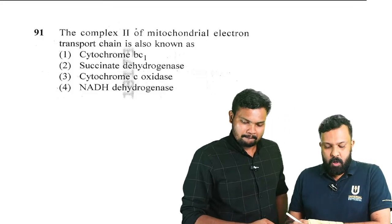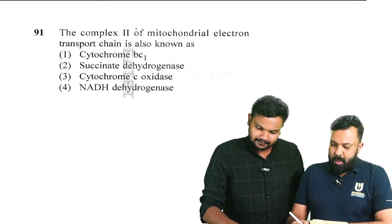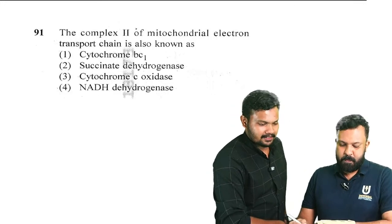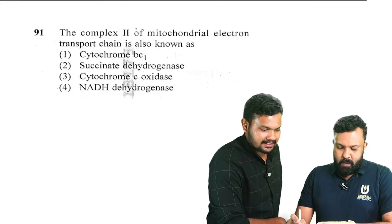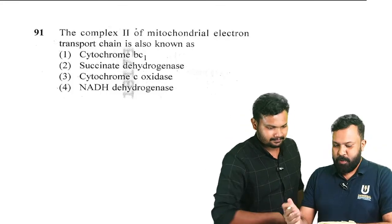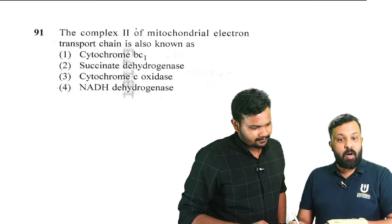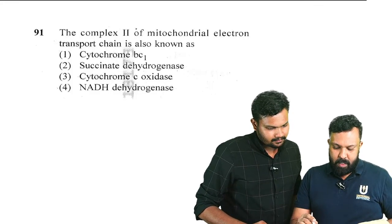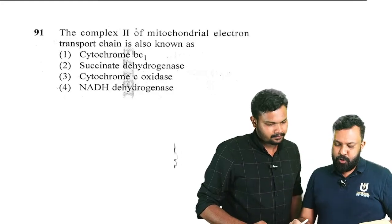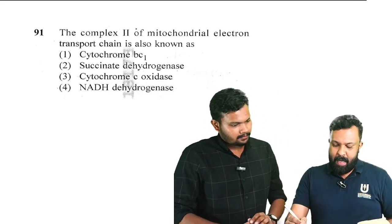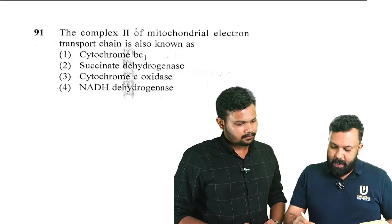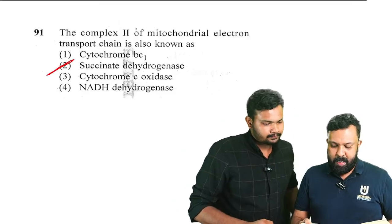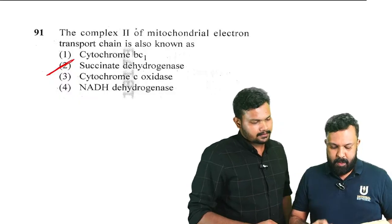Let's have an overview about the botany questions. The very first question is on respiration — the inner membrane complex is the discussion. Complex number two of the mitochondrial electron transport chain is known as: options are cytochrome BC1, succinate dehydrogenase, cytochrome C oxidase, and NADH dehydrogenase. The answer is succinate dehydrogenase — option number two is the best answer.